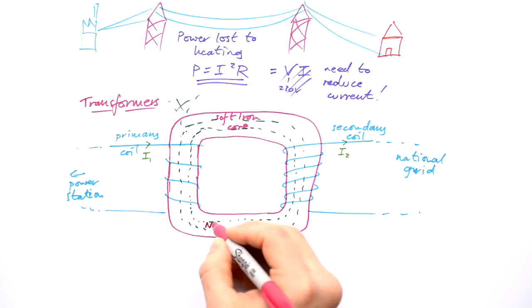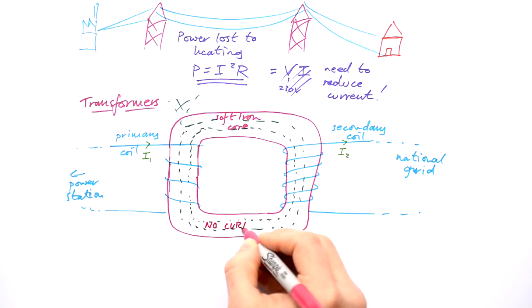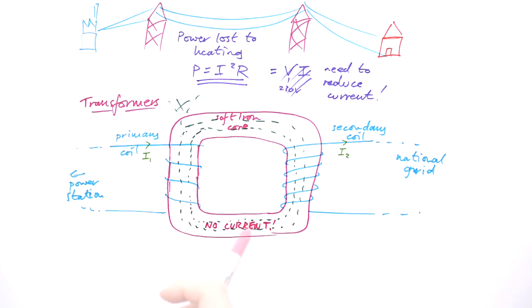Now, be careful. There is no current flowing from here to here through the iron core. This is a wireless transmission of current, as it were.